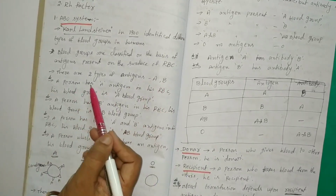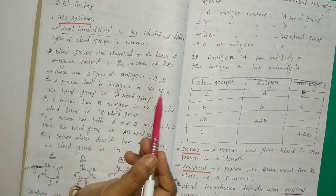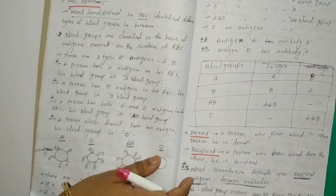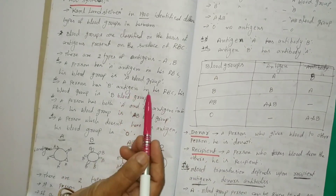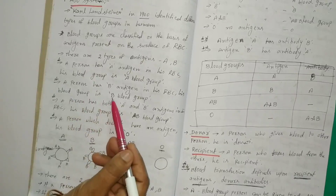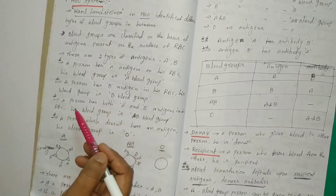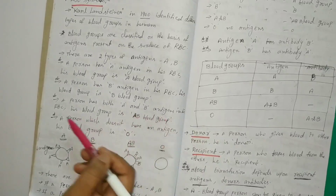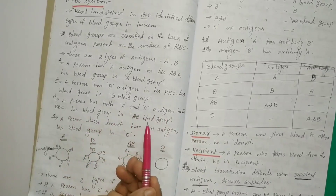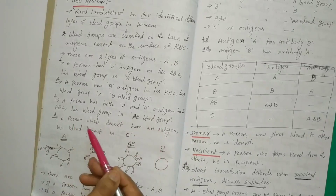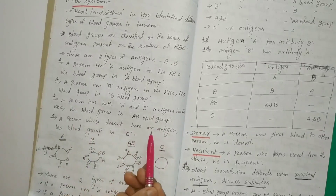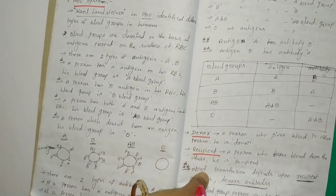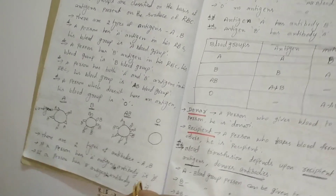A person who has A antigen in his RBC, his blood group is A. A person who has B antigen in his RBC, his blood group is B. A person who has both A and B antigens in his RBC, his blood group is AB. A person who doesn't have any antigen, his blood group is O. So there are four types of blood groups.